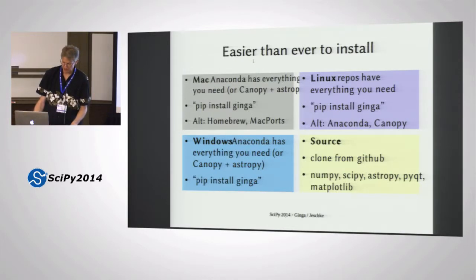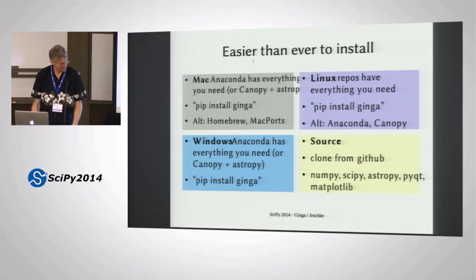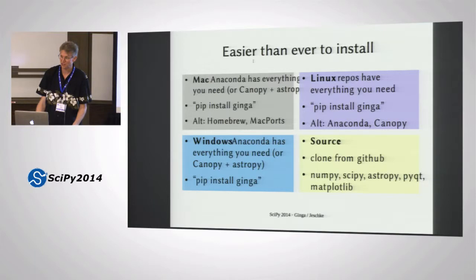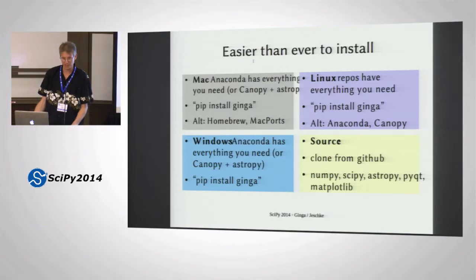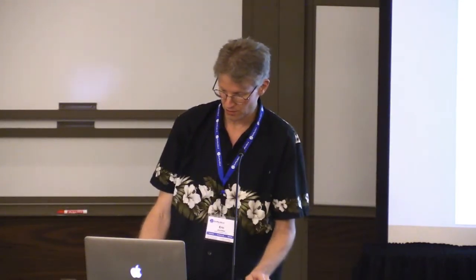Last year this thing was a little bit difficult to install, but thanks to excellent help from the AstroPy people and other contributors, it's now a basically distutils-type install. Anaconda and Canopy have come a long way and basically now have everything you need. So if you've already got Anaconda or Canopy installed, all you need to do is pip install Ginga and you've got it. It's a straight Python application that just needs some libraries like SciPy, AstroPy, PyQt, and Matplotlib. Linux repos have everything you need, and on the Mac you can use Homebrew or MacPorts.